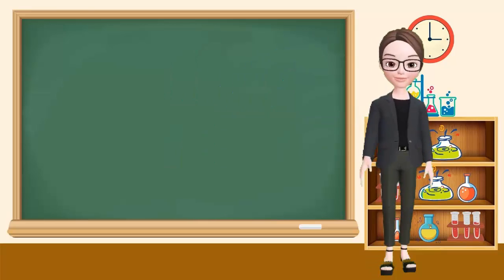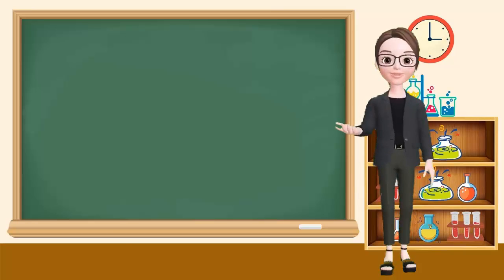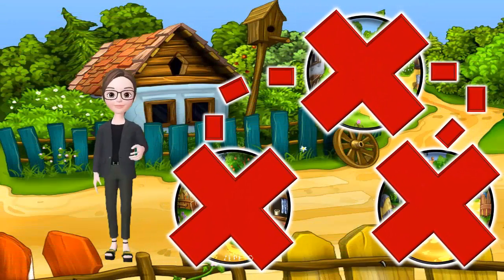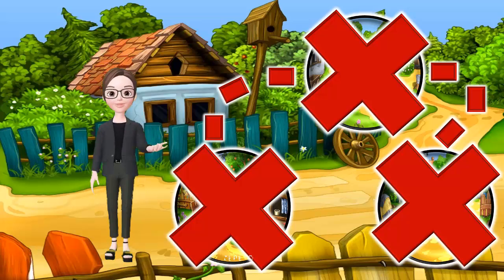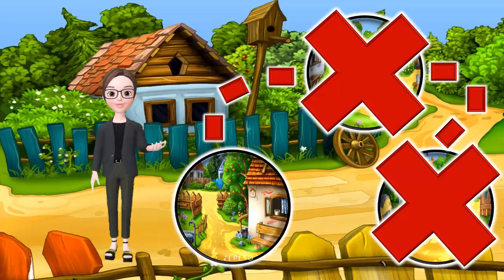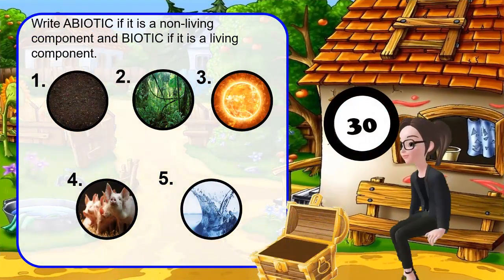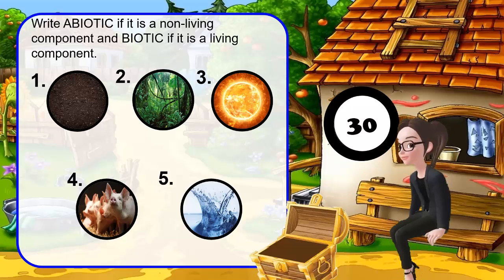This is the end of our discussion. Are you ready for our challenging activities? We have here a map — you can get a treasure from each map. But before you can get the treasure, you need to complete a task. So get your pen and paper. For your first task, write 'abiotic' if it is a non-living component and 'biotic' if it is a living component. You have 30 seconds to answer this.